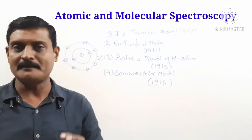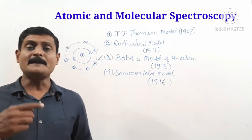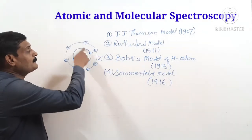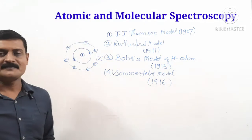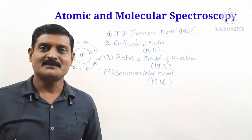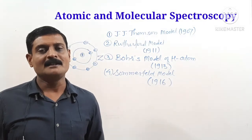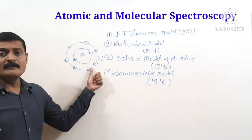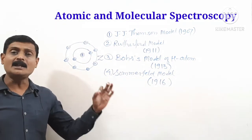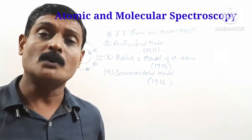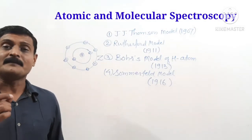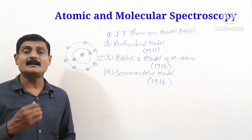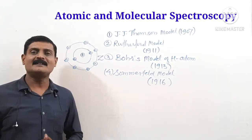There are two drawbacks. First, if the electron continuously emits energy, its energy keeps decreasing and it follows a spiral path, finally falling into the nucleus — meaning the atom would not be stable. Second, while the electron revolves around the nucleus and continuously emits energy, the spectrum of the atom should be continuous. But experimentally, it is found that there is a line spectrum.